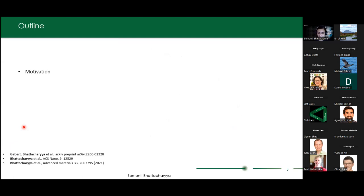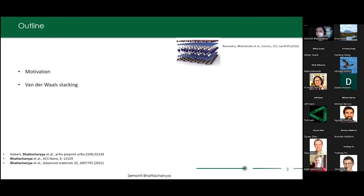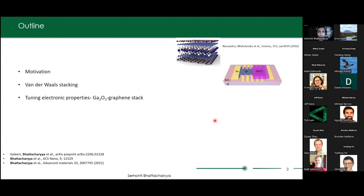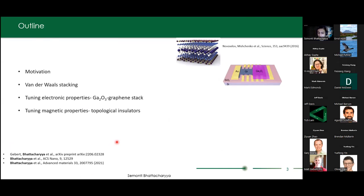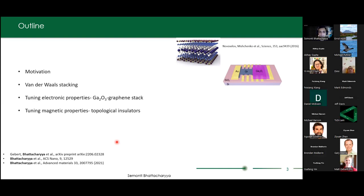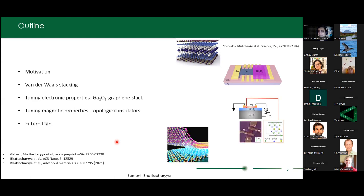This is the outline of the talk. I will first motivate what Dirac fermions are and why they are interesting. Then I'm going to talk about how we use Van der Waals stacking in the lab. I'll then present two example cases where we looked into Dirac materials at interfaces: gallium oxide–graphene stacks, and inducing magnetic properties in topological insulators. Finally, I'll talk about future plans. If you have any questions in between, please stop me.